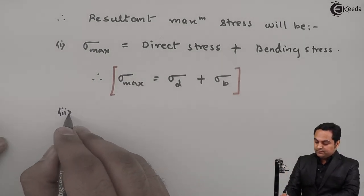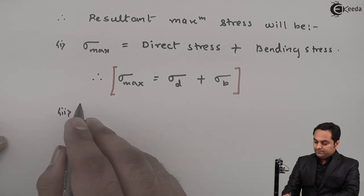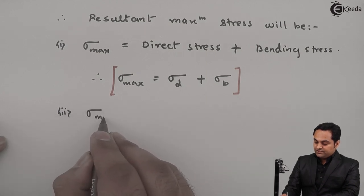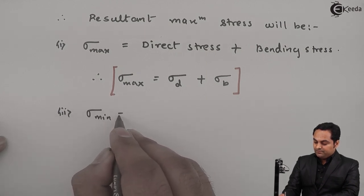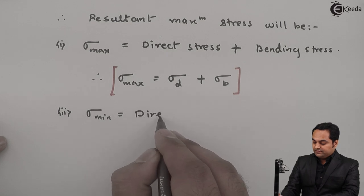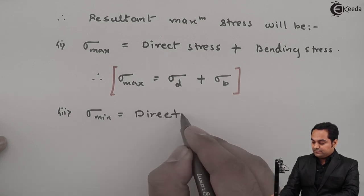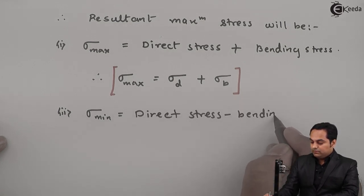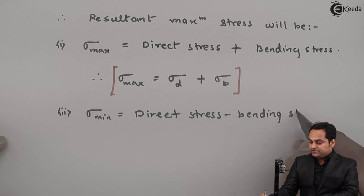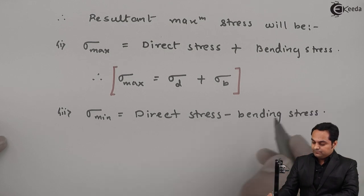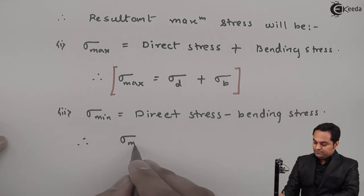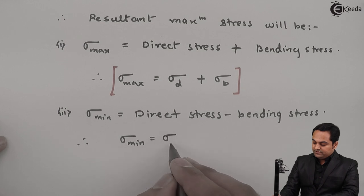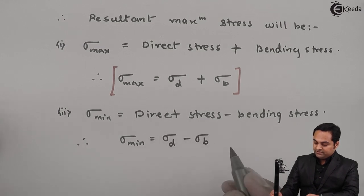Similarly, the resultant minimum stress sigma minimum will be direct stress minus bending stress, that is sigma suffix D minus sigma suffix B.